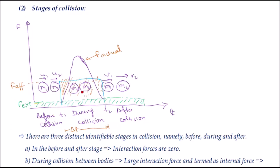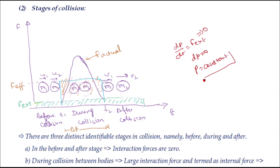We have also learned the stages of collision. Using a force-time graph, the whole process is divided into three parts: before collision, during collision, and after collision. The external force — gravity, friction — is very small and negligible. So during collision we have zero net external force, meaning conservation of momentum applies. From Newton's second law, dp/dt = F_external = 0, so dp = 0 and momentum p = constant.